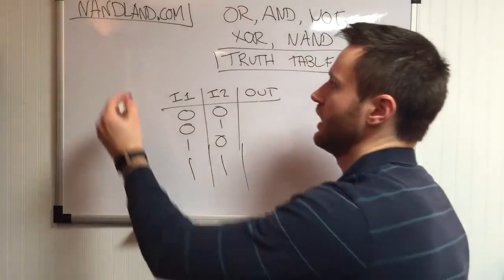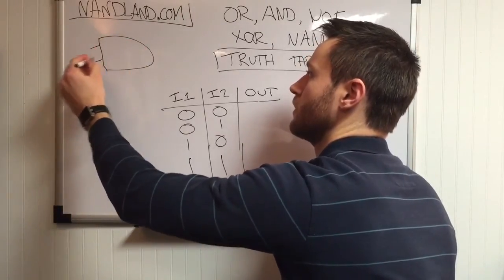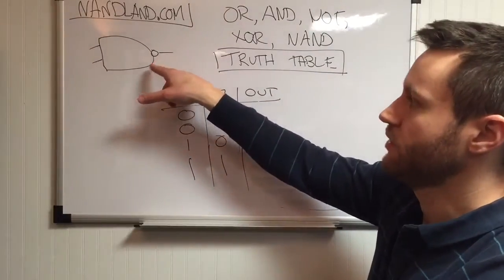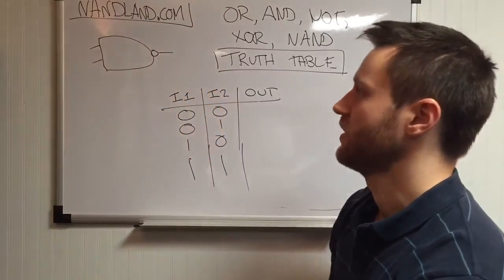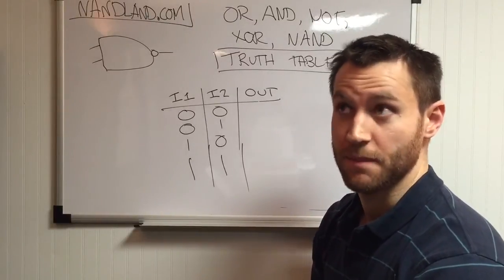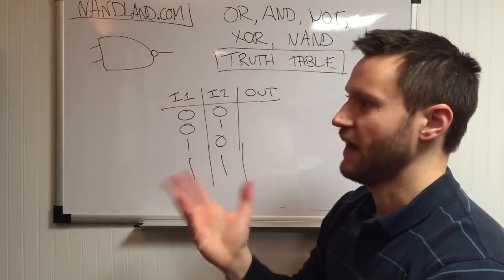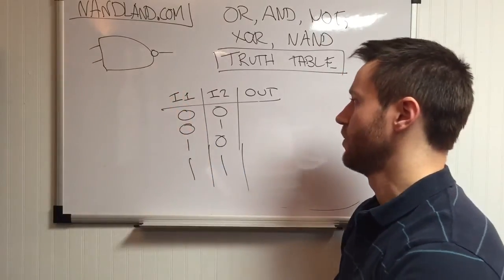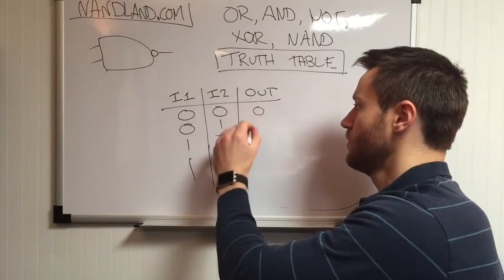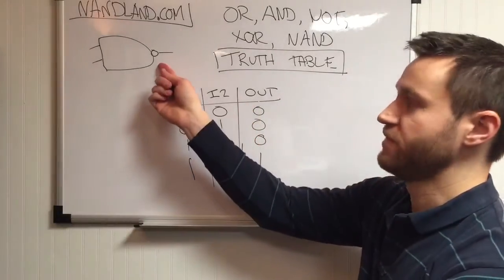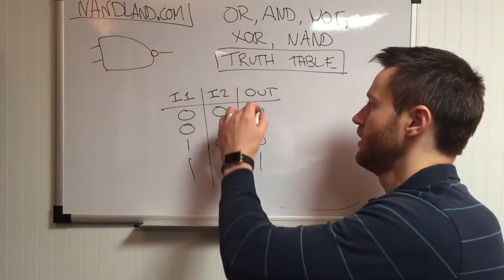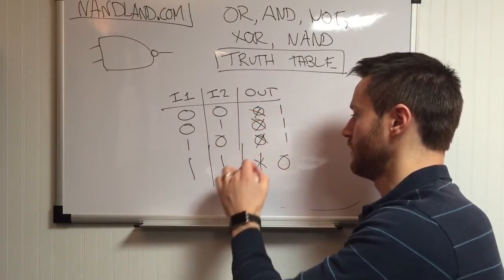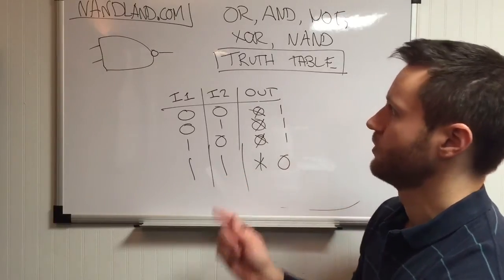Now I want to talk about a NAND gate — gotta love NAND gates. A NAND gate looks like an AND gate with a bubble on the end. Whenever you see a bubble in a schematic with gates, it means NOT — it's the inverted, opposite of what it would normally be. So it's the opposite of what an AND gate would be. A normal AND gate output was 0, 0, 0, 1. The output is inverted with a NAND gate, so now those become 1, 1, 1, 0. That is the truth table for a NAND gate.